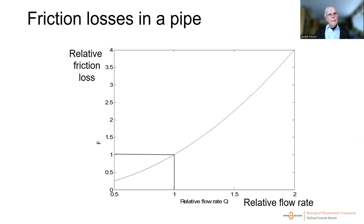There is also friction loss in pipes. If the flow rate doubles, the friction loss increases four times — the friction loss is proportional to the square of the relative flow rate. This means pipe diameter must be designed together with flow rate: a too-narrow pipe results in very high friction loss. This applies to both gases and liquids.